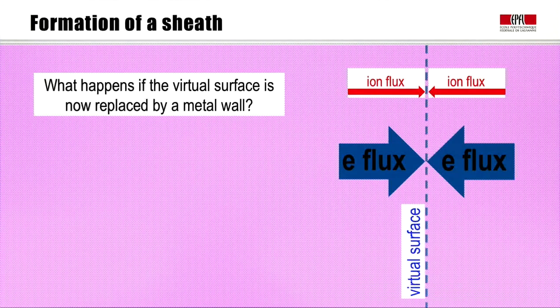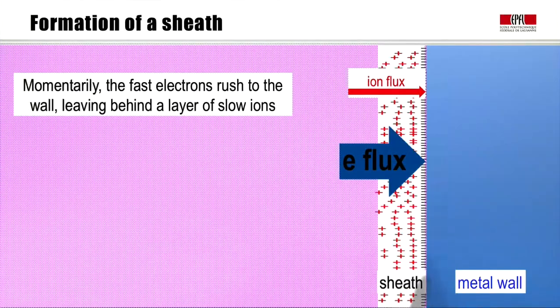Now we have to consider what happens if the virtual surface is replaced by a metal wall. In a very short time, the electron flux will flow quickly to the wall and form a negative charge on the surface. This will leave behind a layer of positive ions. This is called the sheath. The sheath forms in contact of a plasma with a metal wall.